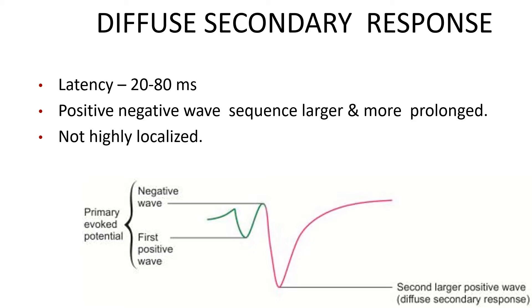The diffuse secondary response is characterized by a latency of about 20 to 80 milliseconds, with a positive-negative-negative wave sequence that is larger and more prolonged than the primary evoked potential. The diffuse secondary response is not highly localized — it can be recorded at the same time from most parts of the cerebral cortex.